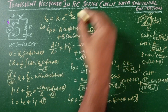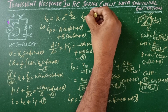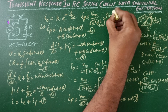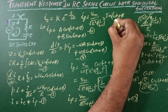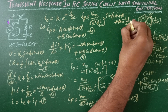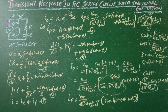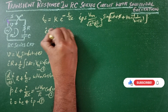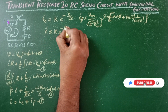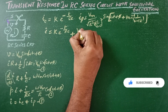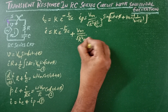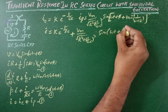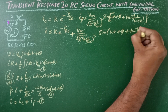So IP equals Vm divided by √(R² + 1/(ωC)²) times sin(ωt + φ + θ), where θ equals tan⁻¹(1/(ωCR)). We can write this as IP equals Vm / √(R² + 1/(ωC)²) · sin(ωt + φ + tan⁻¹(1/(ωCR))).